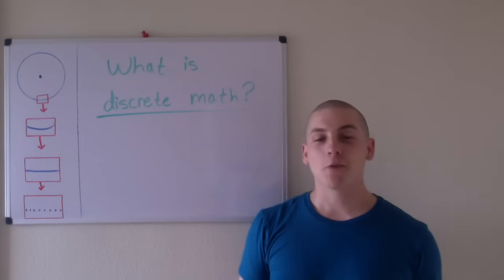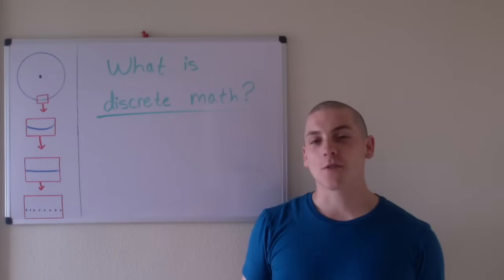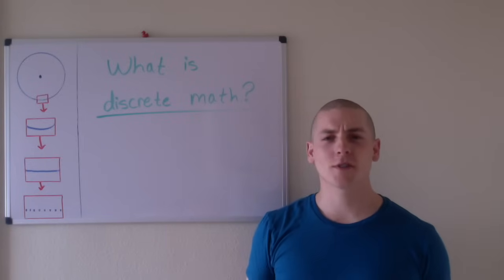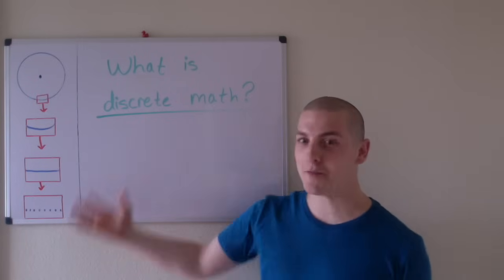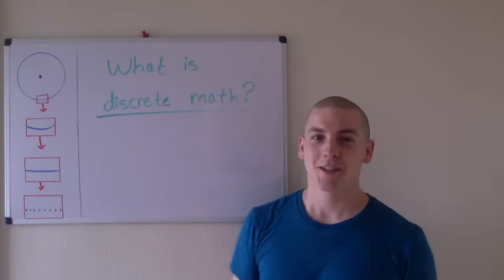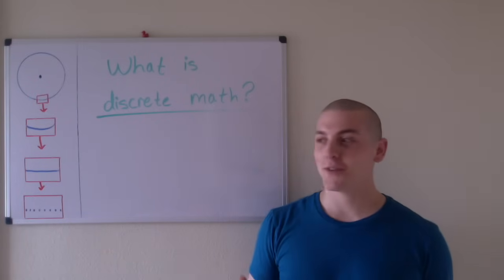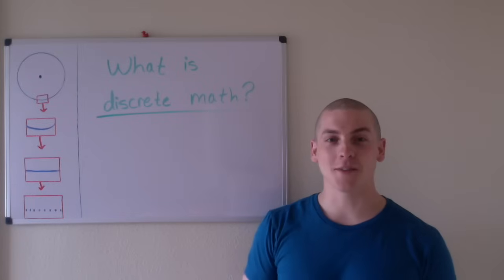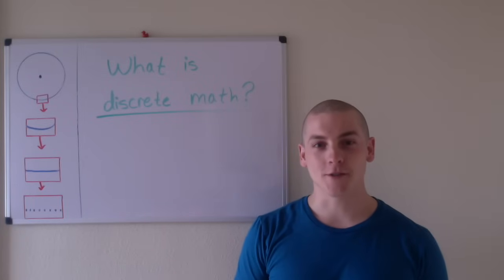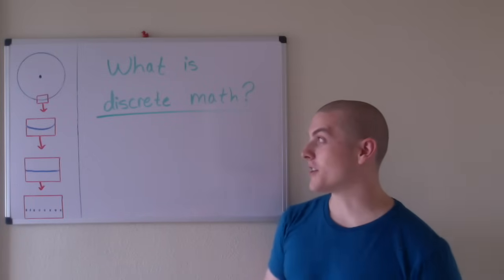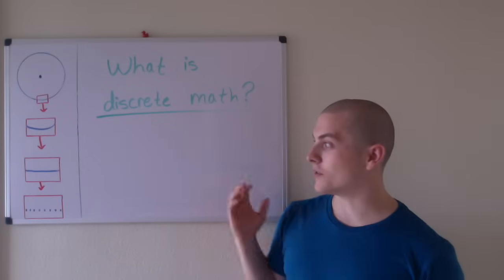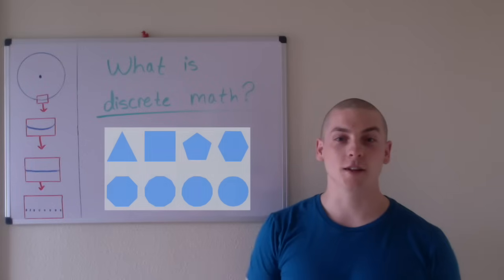Now we've all seen circles on computers, so what's going on? How is this possible? We just established that it's impossible. Well, the answer is that they're approximations. For example, consider regular polygons.